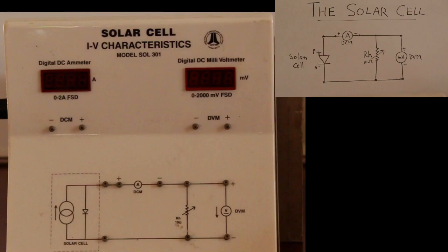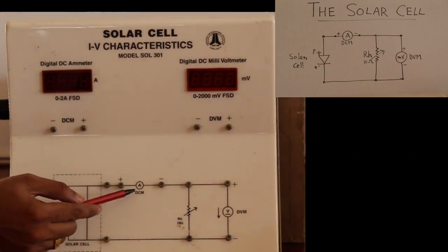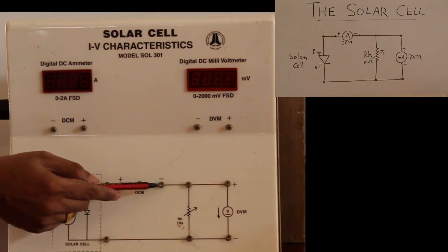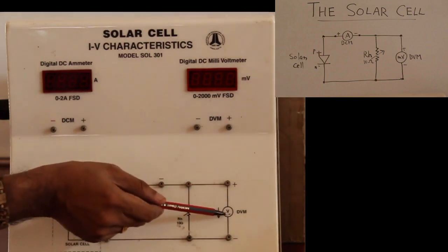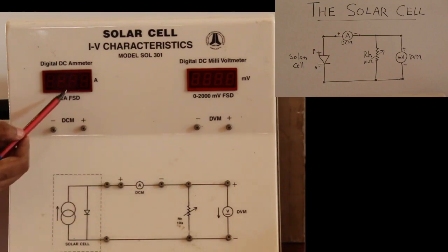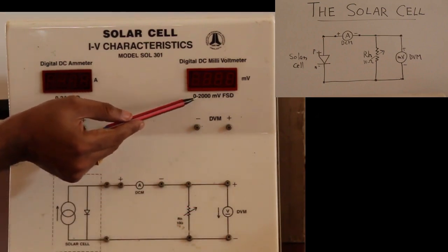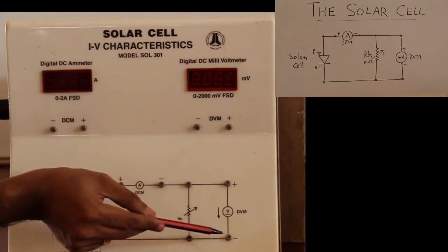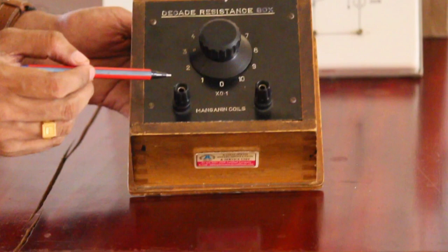The figure to the left is the trainer kit for doing this experiment, that is to find the IV characteristics of a given solar cell. On this trainer kit we find the same circuit we discussed. This is the circuit symbol for the solar cell with its terminals, and there is a DC ammeter. The positive terminal is connected to the P region and the negative is connected to one end of the rheostat, and the other end is connected to the N region. A millivoltmeter is connected in parallel to the rheostat. In place of the ammeter I will be placing the DC ammeter of range 0 to 2 ampere, and here the millivoltmeter is in the range 0 to 2000 millivolts, with positive to positive and negative to negative connections.